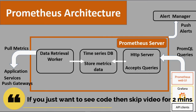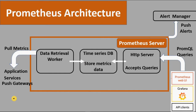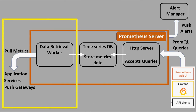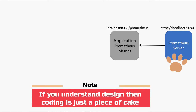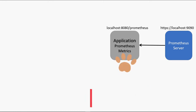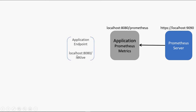As explained in previous videos covering Prometheus architecture, the Prometheus server's data retrieval worker pulls metrics from the application server. For example, a Prometheus server running on localhost port 9090 will crawl the metrics endpoint exposed by your application, say at /prometheus.